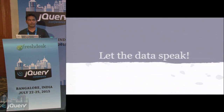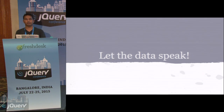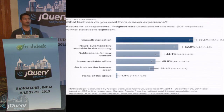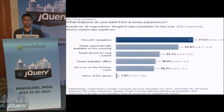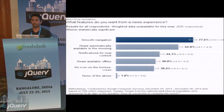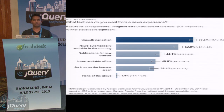Let's kick start the talk with some data. According to a survey by a Googler, users were asked what the most required feature was from a given set: smooth navigation, news automatically available in the morning, notifications, or others. The topmost was smooth navigation. People are not asking you to ping them via service workers — what they're asking is for you to render your existing application at 60 FPS and have a smooth navigation running.